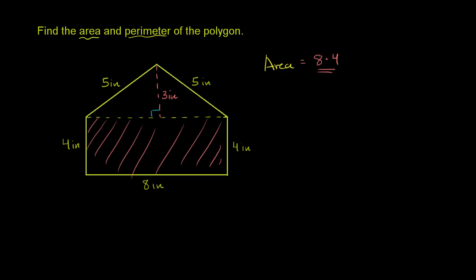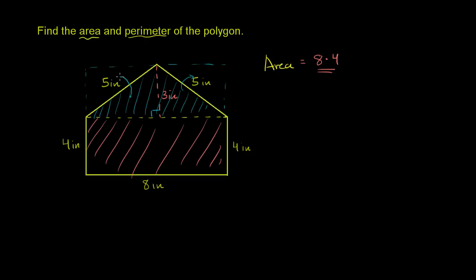Then we have this triangular part up here. For a triangle, the area is base times height times one half. That makes a lot of sense, because if you just multiplied base times height, you would get the area of that entire rectangle. And you see that the triangle is exactly half of it — if you took this part of the triangle and flipped it over, you'd fill up that space. So the triangle's area is half of its base times its height.